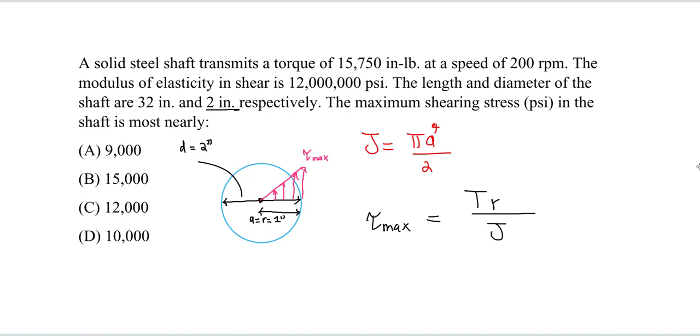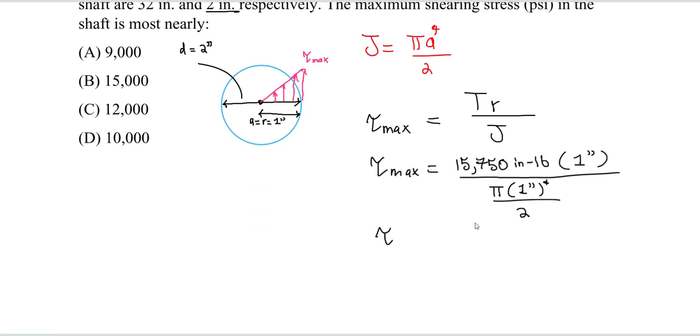We'll just plug everything in and solve. We take our 15,750 inch-pounds. The units look good. Our radius is 1 inch. We take the diameter divided by 2, so it's just 1. The polar moment of inertia, the measure of resistance to twisting for shafts, is pi times 1 inch to the fourth divided by 2. Solving this, I got around 10,000 psi.